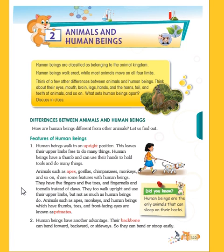They also have toenails and fingernails. They too walk upright and use their upper limbs, but not as much as human beings do. Chimpanzees and gorillas can hold and do things, but not as much as we can. Animals such as apes, monkeys, and human beings which have thumbs, toes, and front-facing eyes are known as primates.